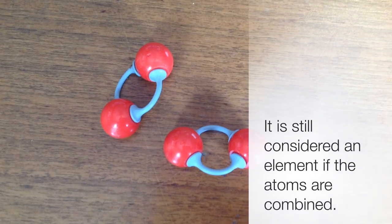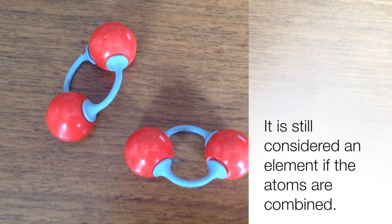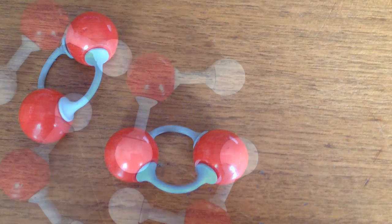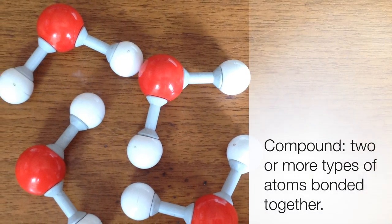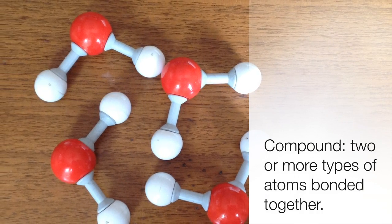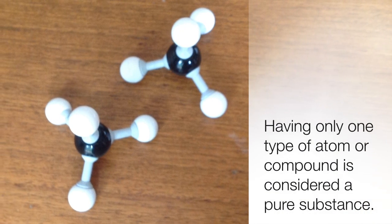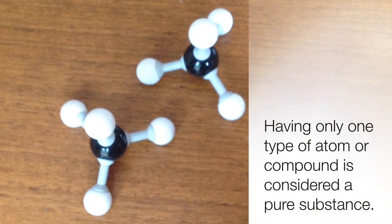Elements can be made from atoms that are free or combined, as long as they're all the same kind. A compound, however, contains two or more types of atoms that are bonded together, as you see in this picture. As long as all of the compounds are the same, it's considered a pure substance.